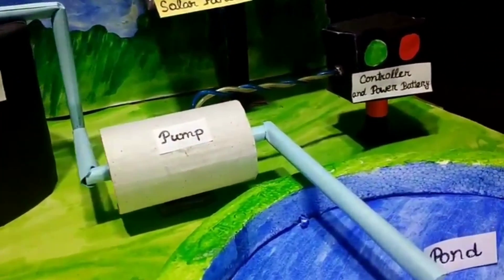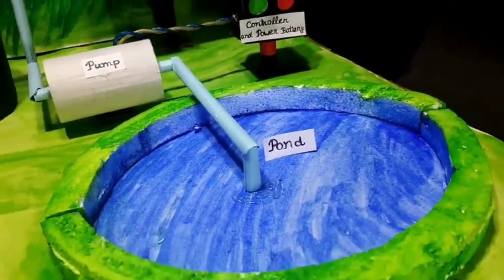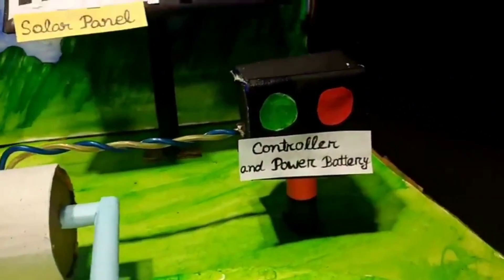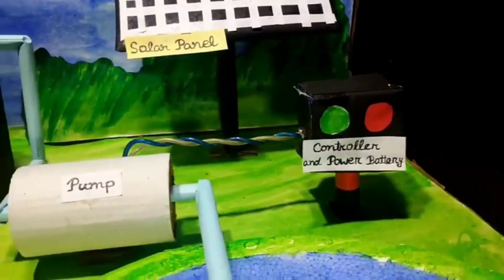Question and answers. What is solar power irrigation system? It is an automatic irrigation system where solar energy is used to operate the irrigation system.